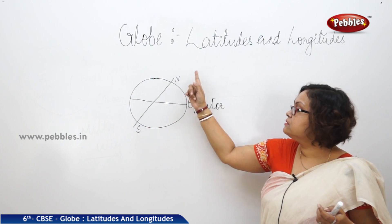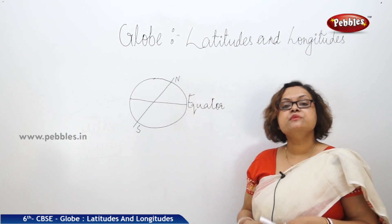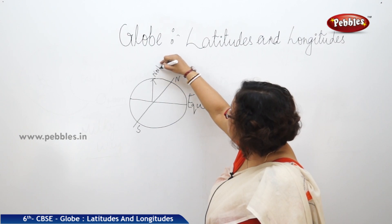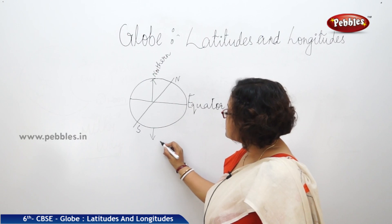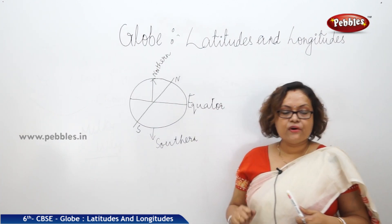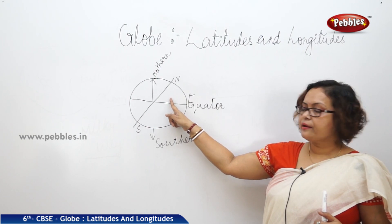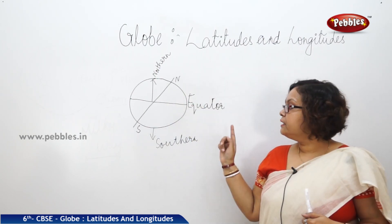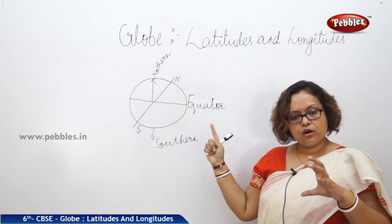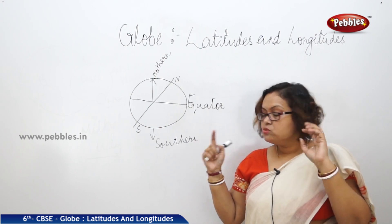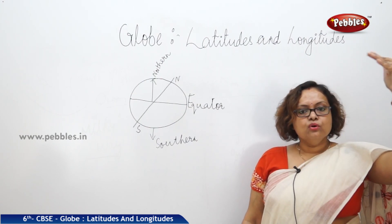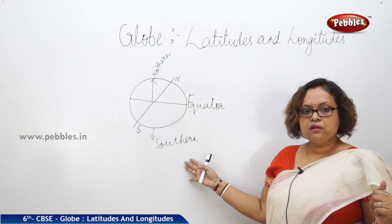The northern side of the equator is known as the northern hemisphere, and the southern side is known as the southern hemisphere. Now check your globe and find out where India is located — you will find India is located in the northern hemisphere. The equator is a circular line because the shape of the Earth is round, dividing the Earth into two hemispheres.